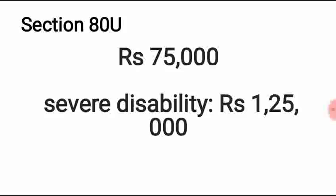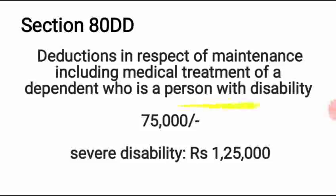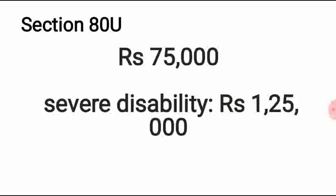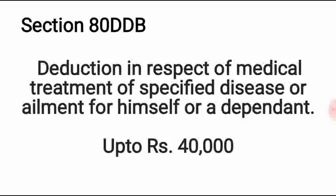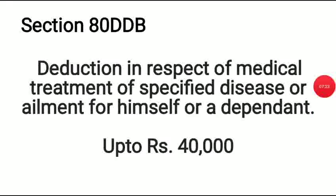In Section 80DD, the disability is of the government employee's dependent. Section 80U, on the other hand, applies when the government employee himself is a disabled person. He is allowed Rs. 75,000 as a deduction, but in case of severe disability, Rs. 1,25,000 is allowed. Section 80DDB allows deductions in respect of medical treatment of specified diseases — for himself or a dependent — with a limit of up to Rs. 40,000.